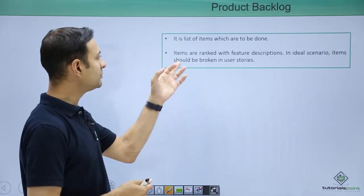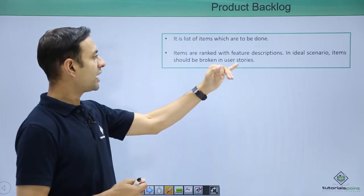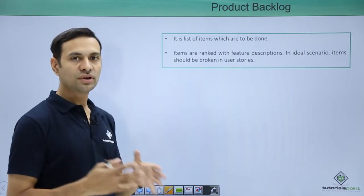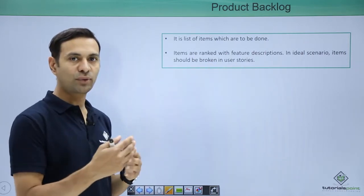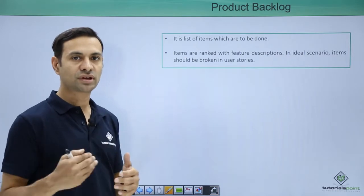Items are ranked with feature descriptions. In an ideal scenario, items should be broken into user stories. So the product backlog should have multiple user stories assigned.